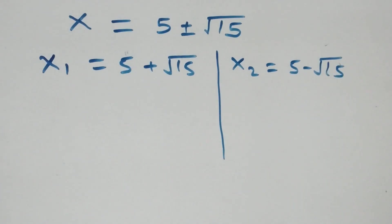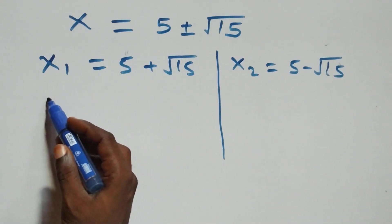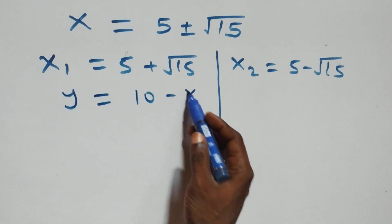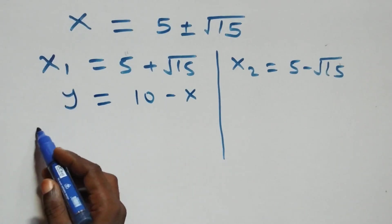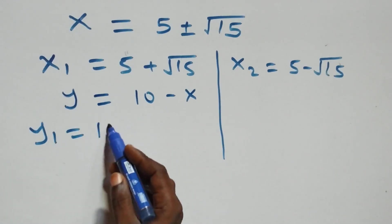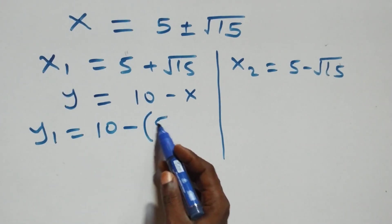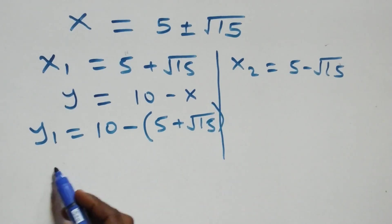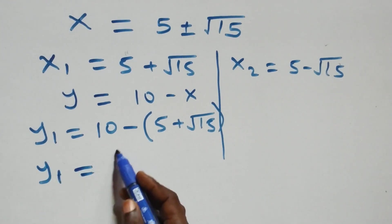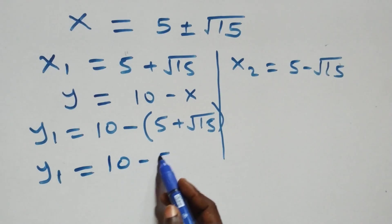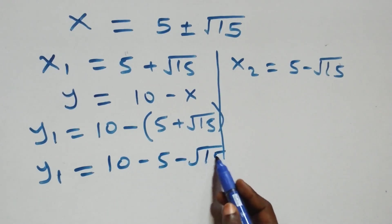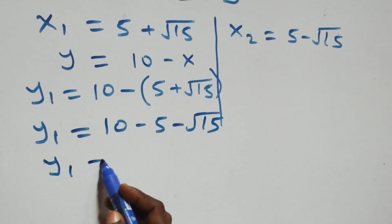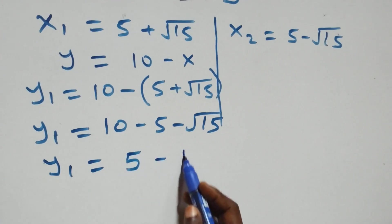Next step, we get the corresponding value of y from the relation y equals to ten minus x. So y₁ equals to ten minus x₁, which is five plus root fifteen. Opening the bracket, y₁ equals to ten minus five, then minus root fifteen. That gives us y₁ equals to five minus root fifteen.